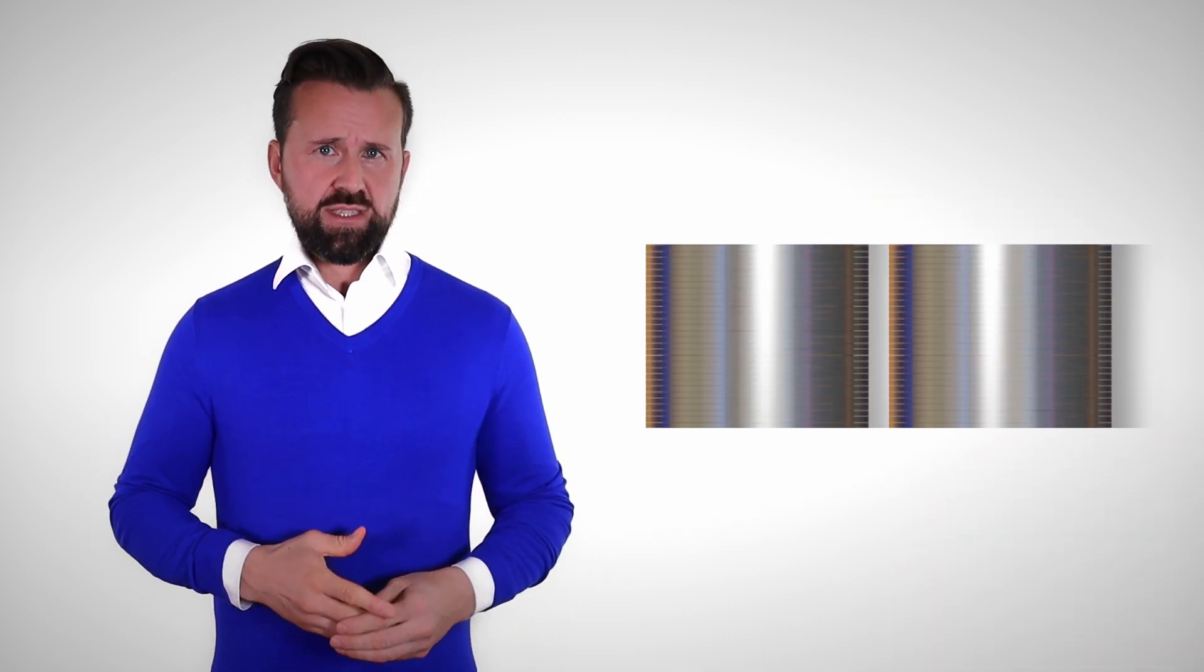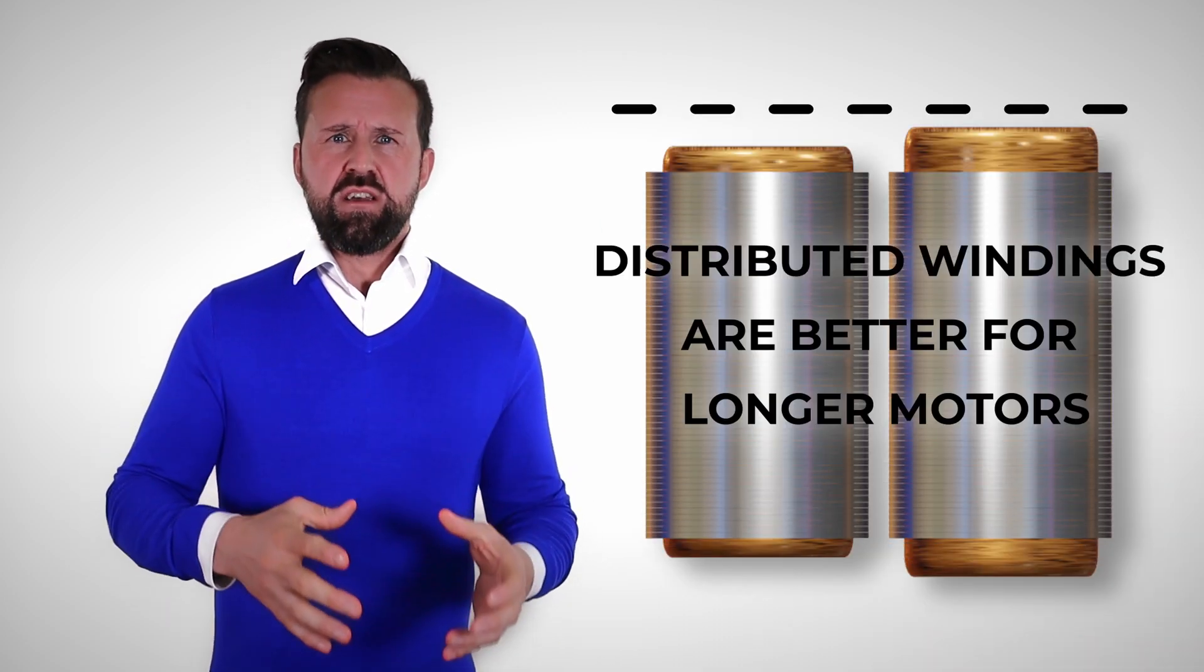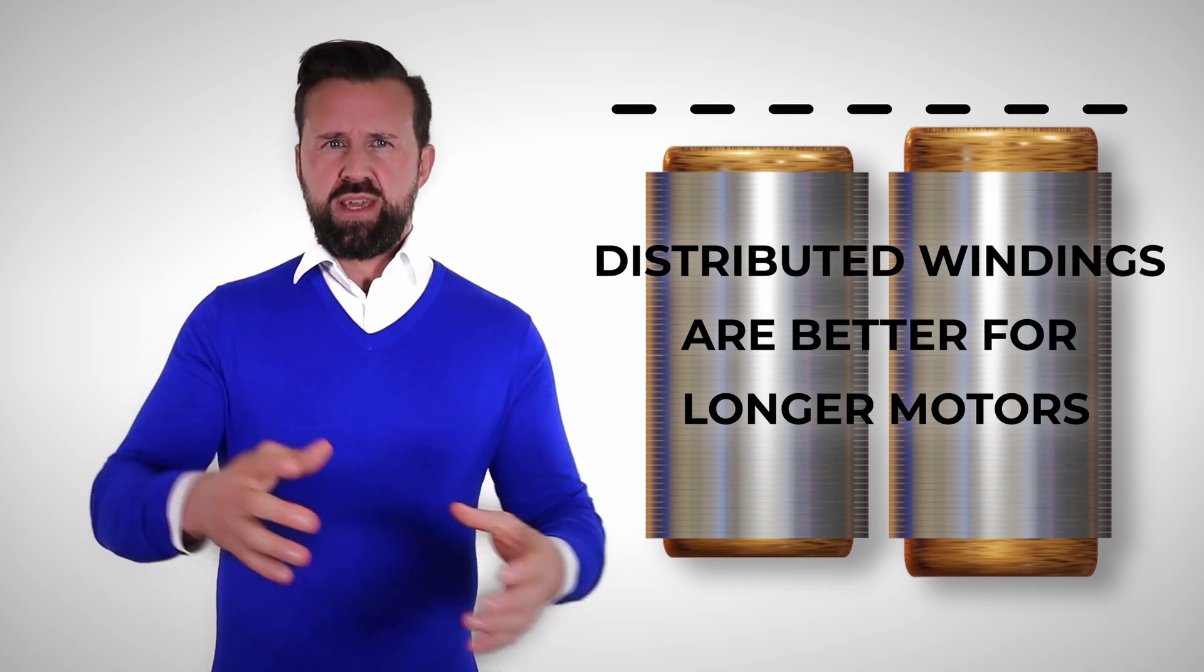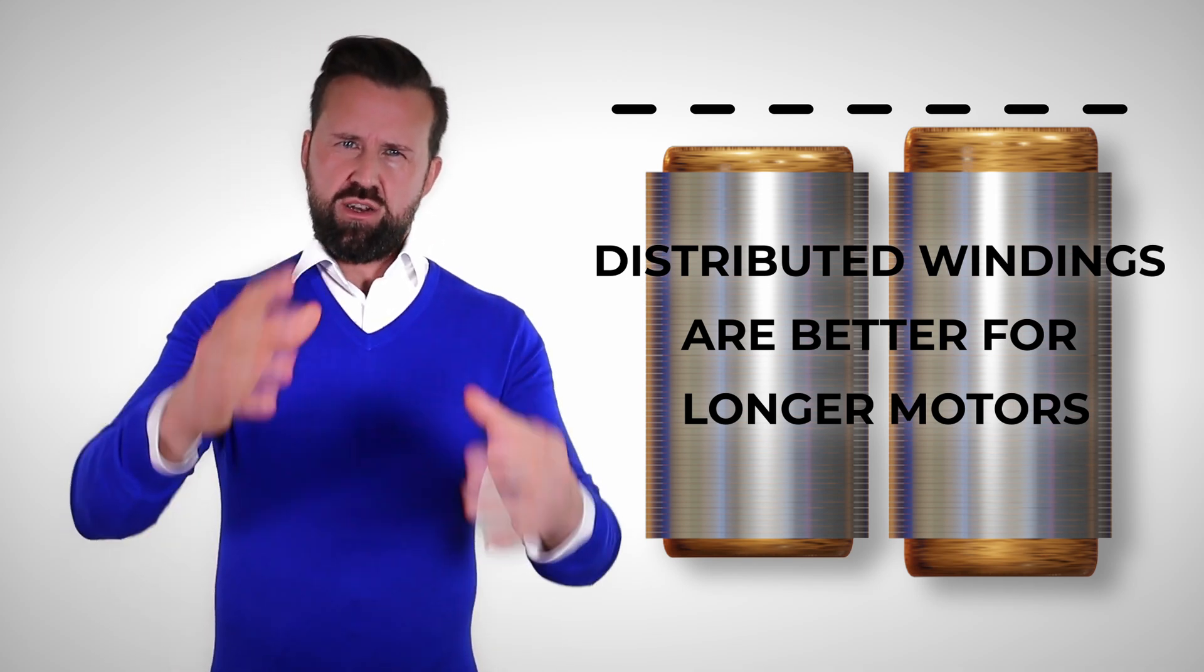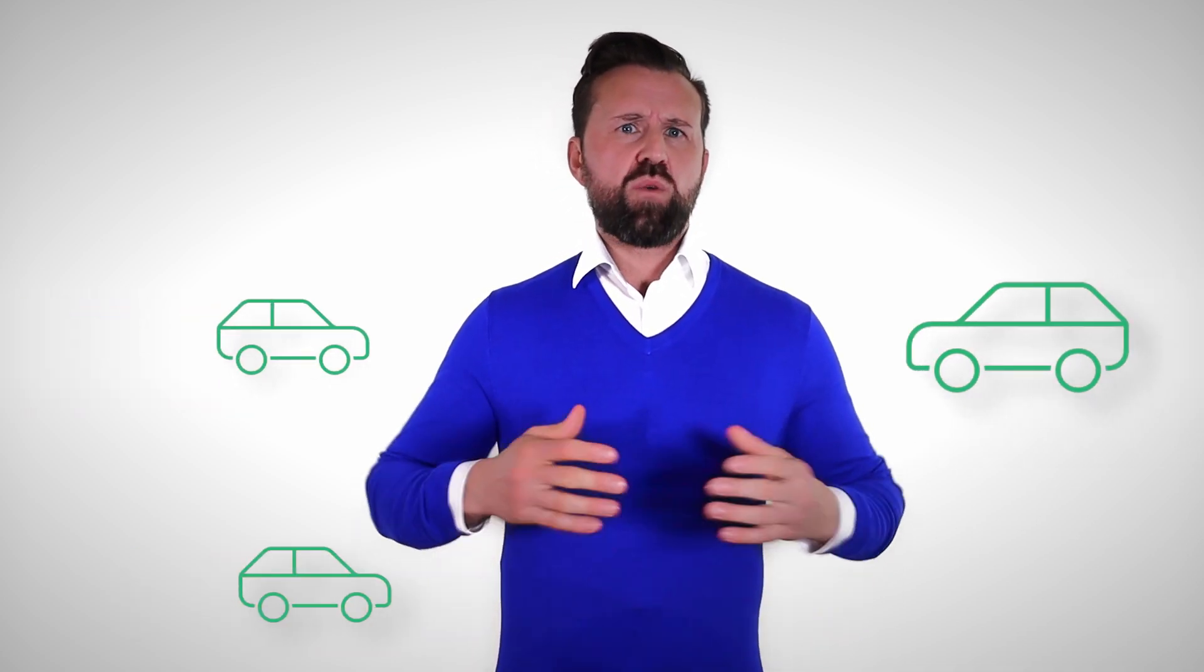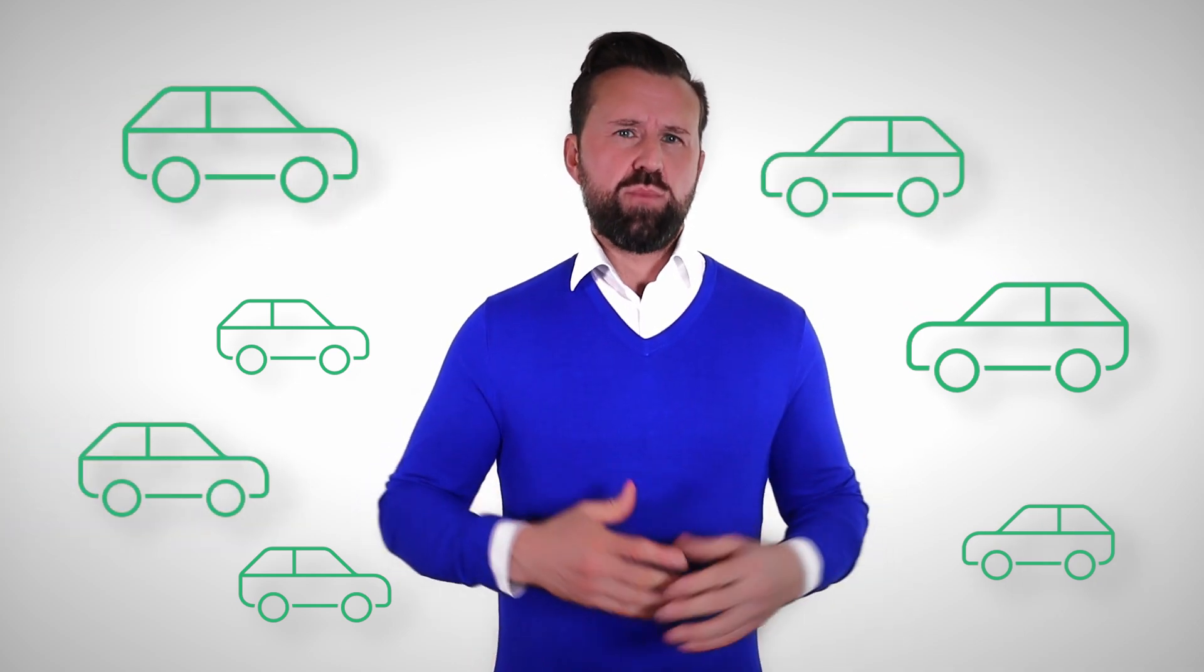At longer electric motors, the influence of the losses from the winding head is not so big in relation to the total losses. So, electrical motors with a concentrated winding are shorter and easier to manufacture. But why do almost all large car manufacturers use distributed windings for their electric vehicles?